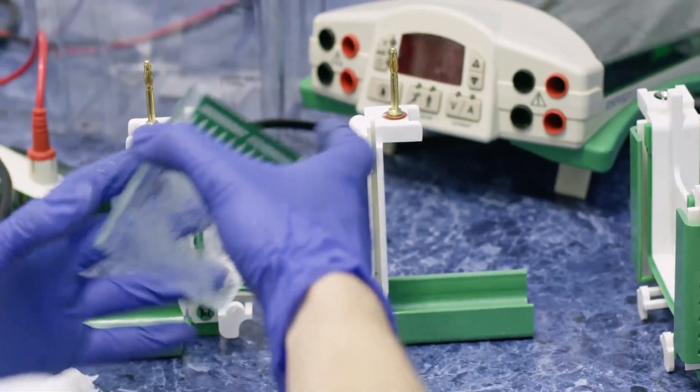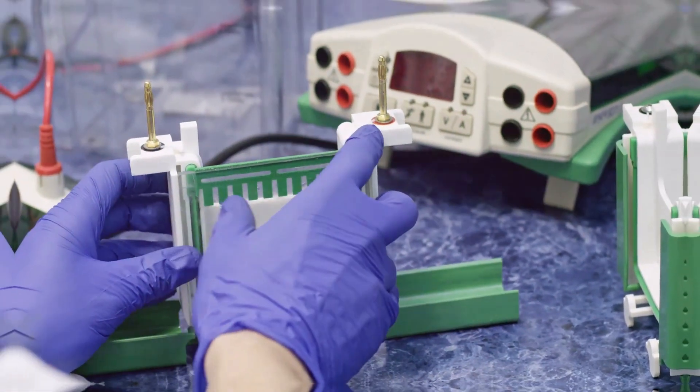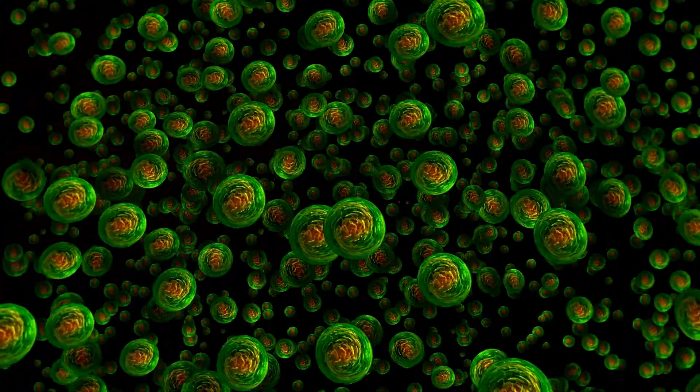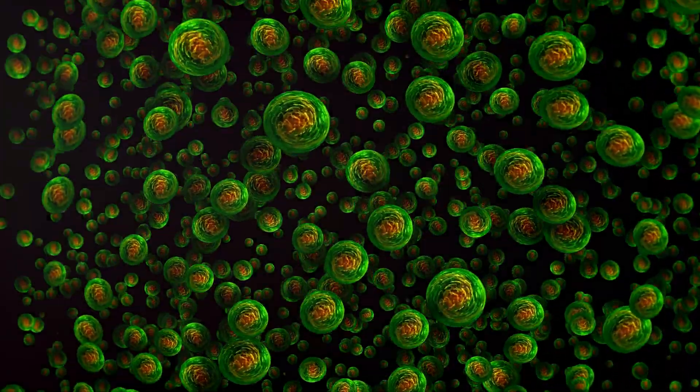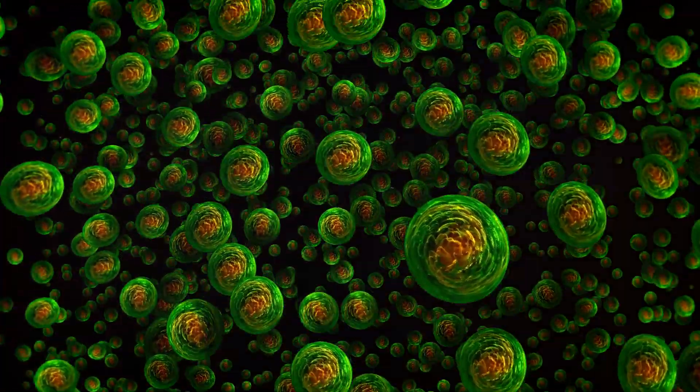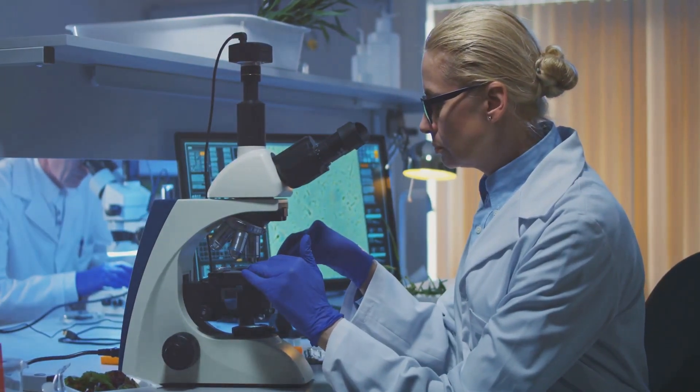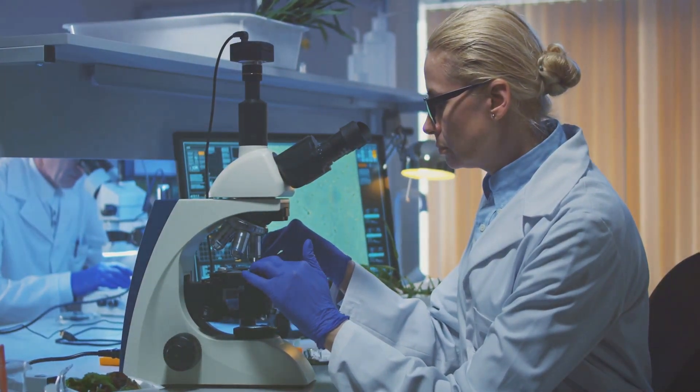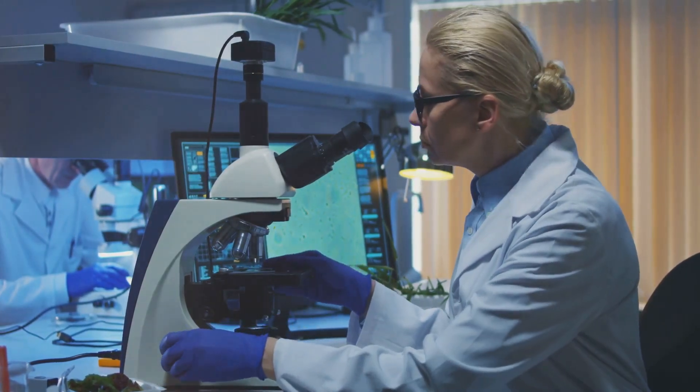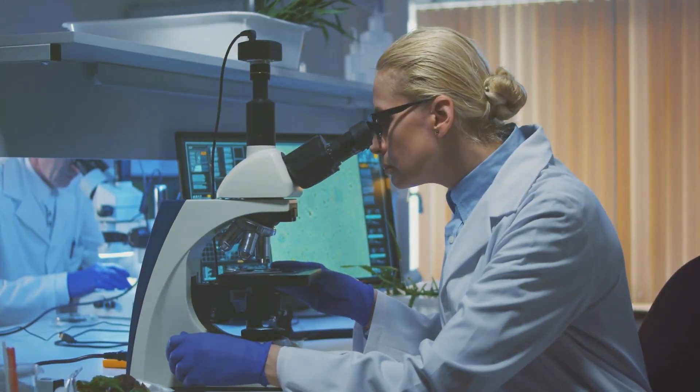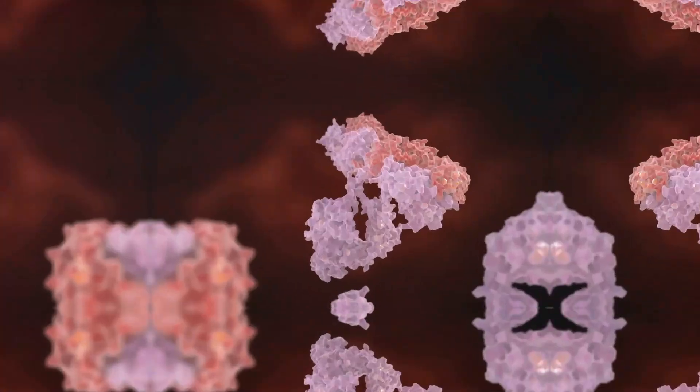MIC tags are a tool whereas MIC proteins are naturally occurring. MIC tags are widely used in research. They act like labels, allowing researchers to track proteins, visualize them in cells, or isolate them for study. By adding a MIC tag, researchers can use special detection methods to observe proteins under microscopes or through other imaging techniques.